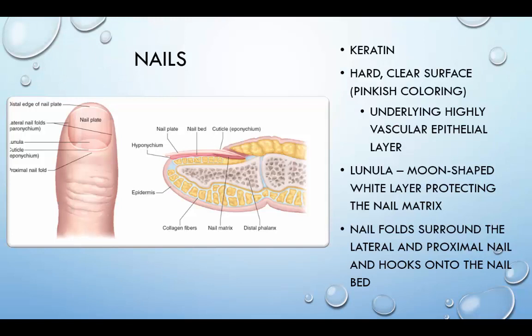The nails are made up largely of keratin and are found on the dorsal surface of all the fingers and toes. They are hard, clear surfaces that present a pink color from the underlying highly vascular epithelial cell layers. The lunula is at the proximal end — a moon-shaped white opaque layer that protects the nail matrix. The nail fold surrounds the lateral and proximal nail and hooks into the nail bed to hold the nail on the finger or toe.